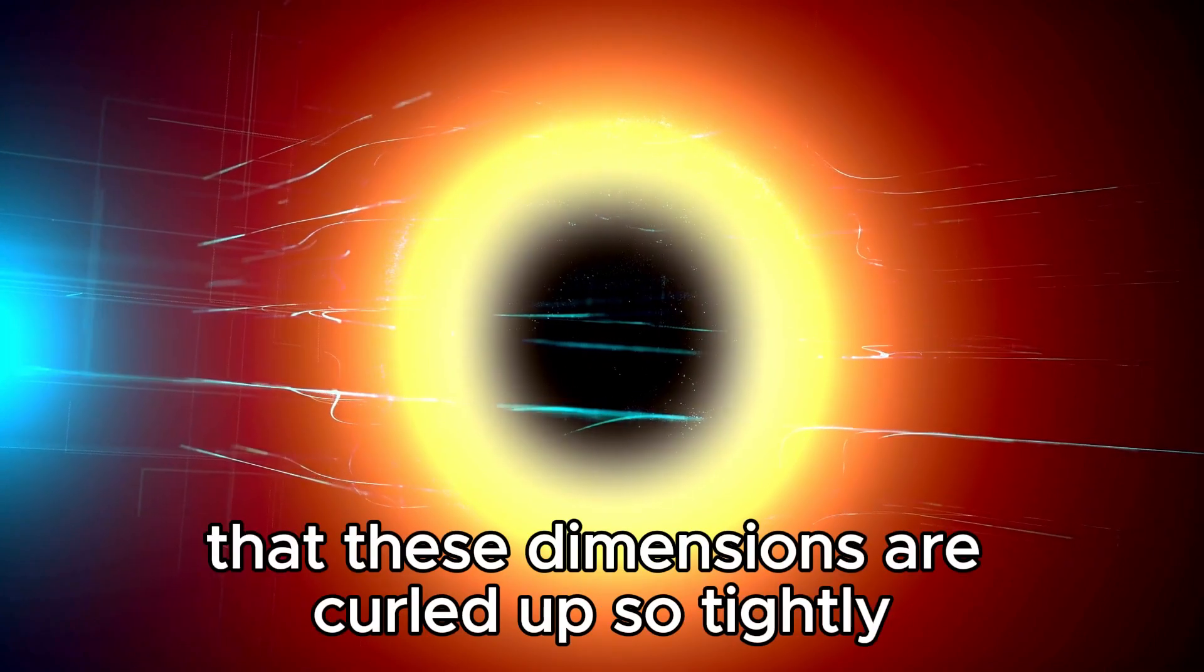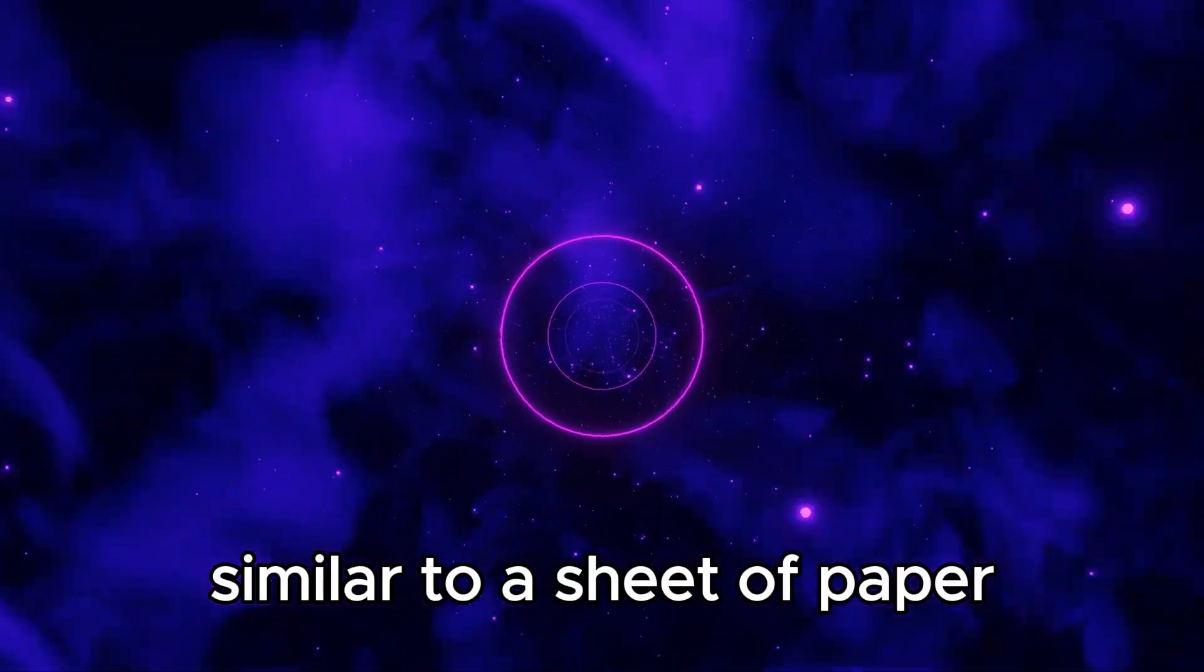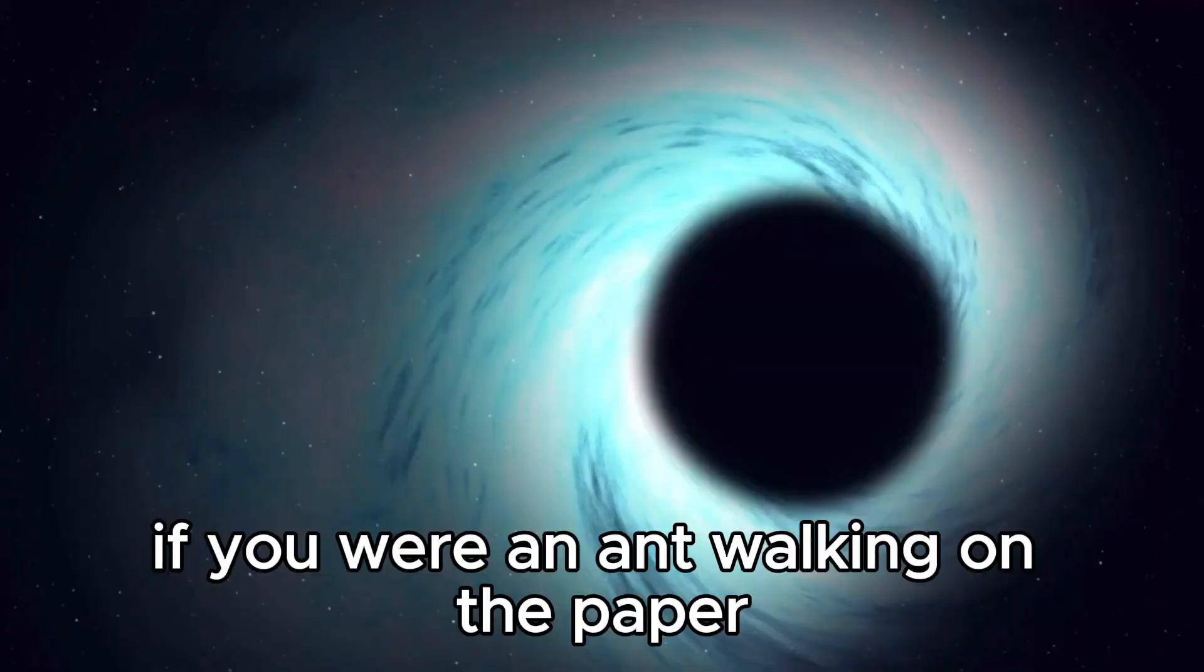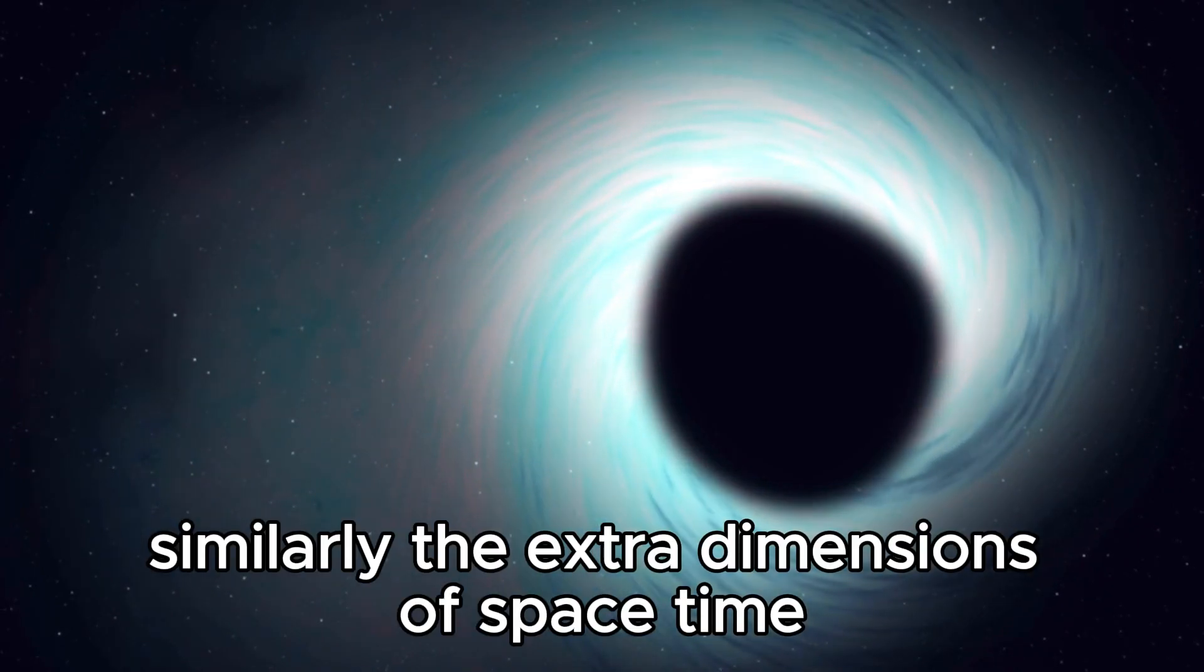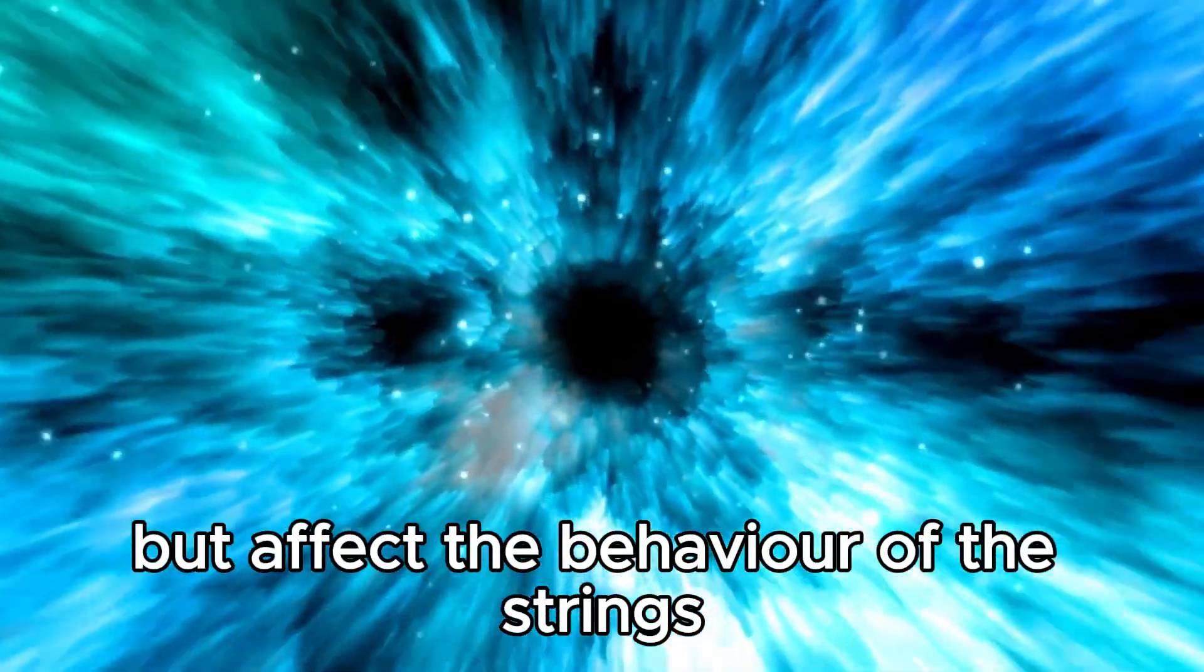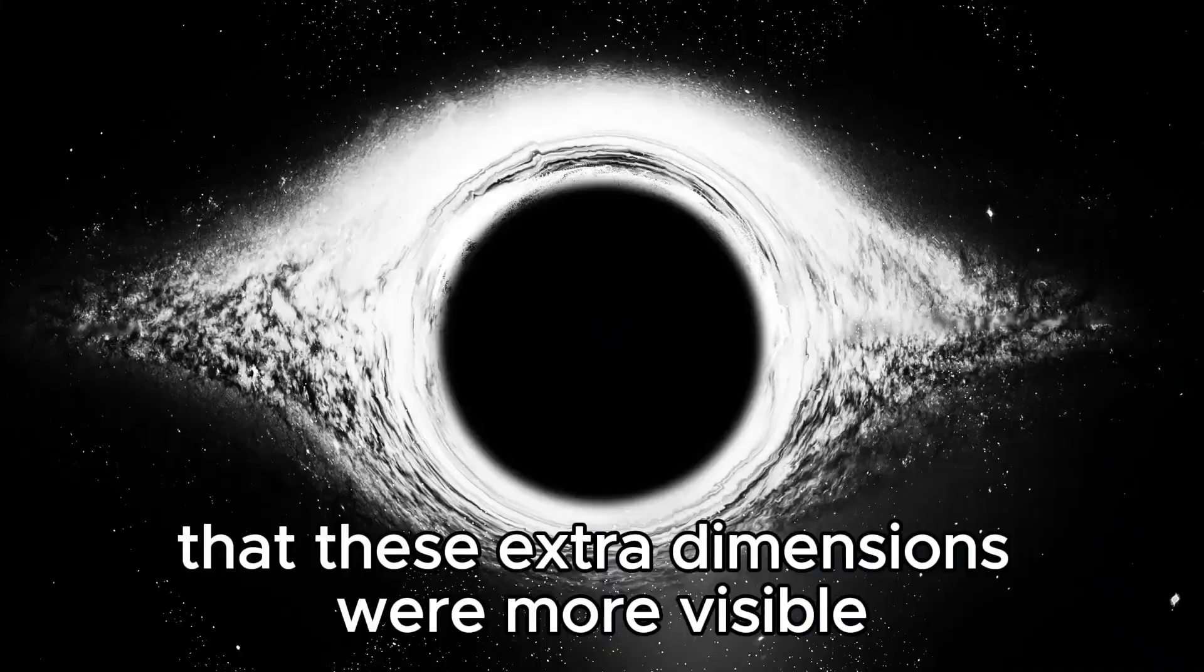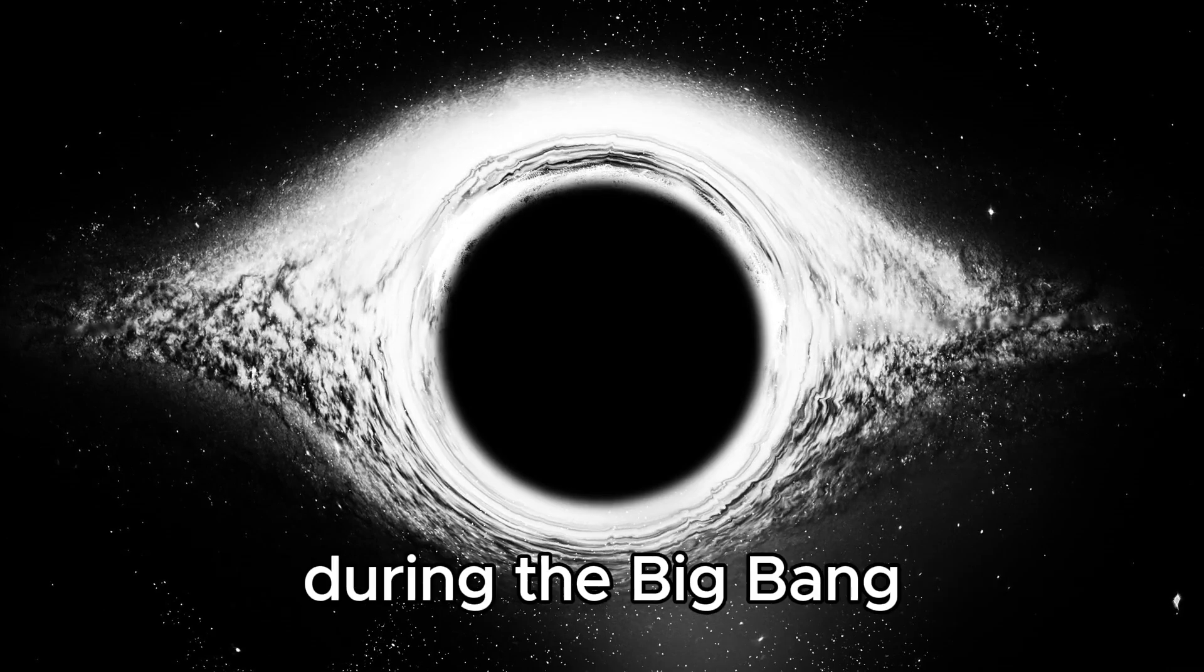One possibility is that these dimensions are curled up so tightly that they are invisible to us, similar to a sheet of paper tightly rolled into a cylinder. If you were an ant walking on the paper, you might not notice the curve. Similarly, the extra dimensions of space-time in superstring theory could be curled up into tiny loops or spirals that are invisible but affect the behavior of the strings vibrating in them. Another possibility is that these extra dimensions were more visible at the universe's beginning during the Big Bang.